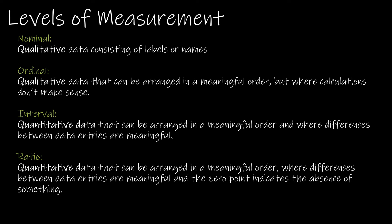We're now going to look at the last way to classify data: levels of measurement. There are four levels of measurement. The first two are both qualitative. Nominal is the lower level — it's really just a category, a label, a name. Ordinal can be arranged in a meaningful order, but calculations don't make sense. For example, a ranking is qualitative and would be ordinal — it has order, but we wouldn't find the average of rankings.